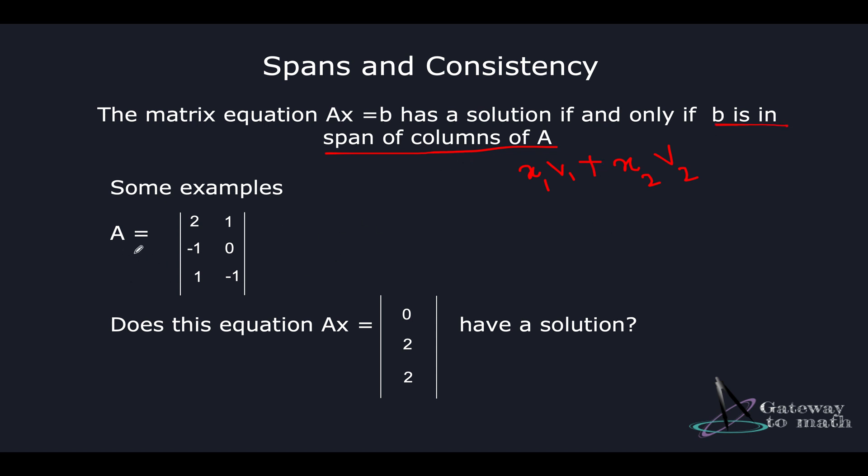Let's take an example. I have a matrix here: A equals [2, -1, 1; 1, 0, -1]. Does this equation Ax equal [0, 2, 2]? That means for some value of x represented in matrix form, when multiplied with this matrix, does it give this resultant [0, 2, 2]?